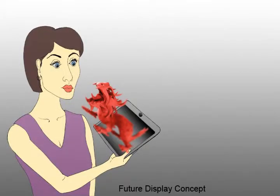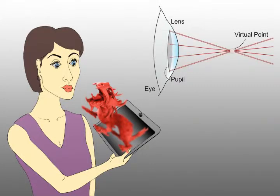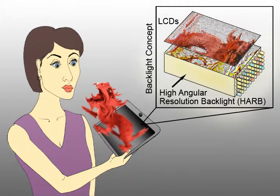A future concept is shown here. The challenge to build such a display is the synthesis of light fields that have sufficient angular resolution to steer multiple different light rays into the pupils of a human observer. To achieve this, we use a High Angular Resolution, or HAR, backlight, combined with stacked layers of LCD panels.